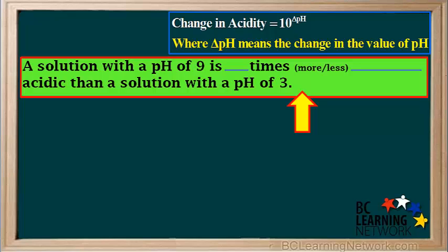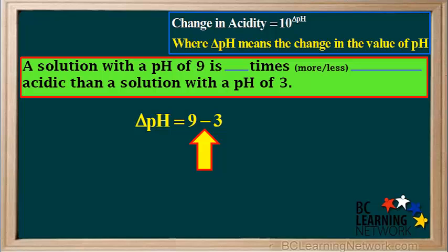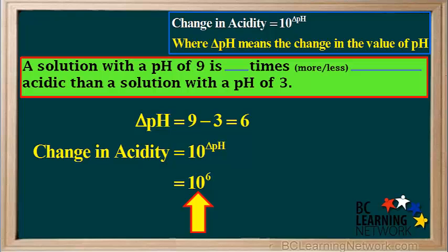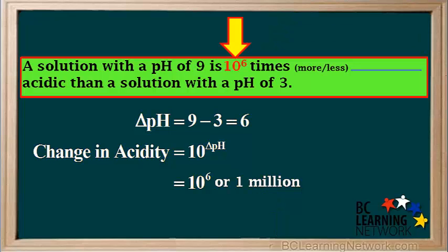Pause the video, try this question, then resume to check your answer. To use the equation to obtain the factor that the acidity changes by, we are just interested in the change in pH, not whether it is going up or down. So we just subtract the smaller pH from the larger pH. So delta pH equals 9 minus 3, which equals 6. The change in acidity equals ten to the power of delta pH, which equals ten to the power of 6, which also equals 1 million. So the factor by which the acidity changes is ten to the sixth, or 1 million.